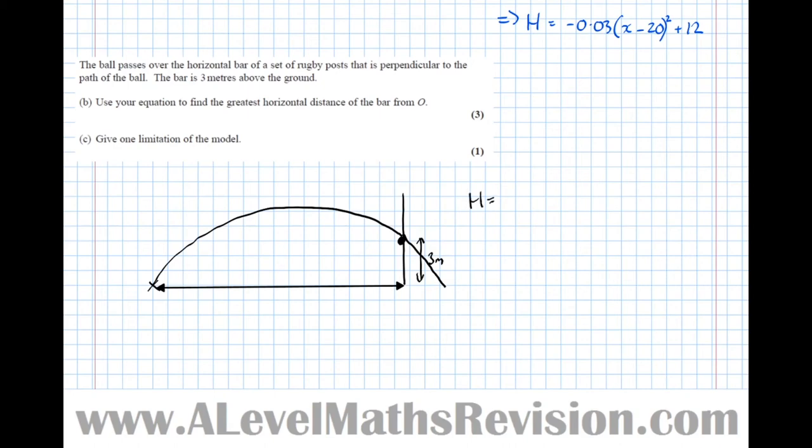So h equals 3, which implies minus 0.03 times x minus 20 squared plus 12 equals 3. And now taking 12 from both sides, we get minus 0.03 times x minus 20 squared equals minus 9.